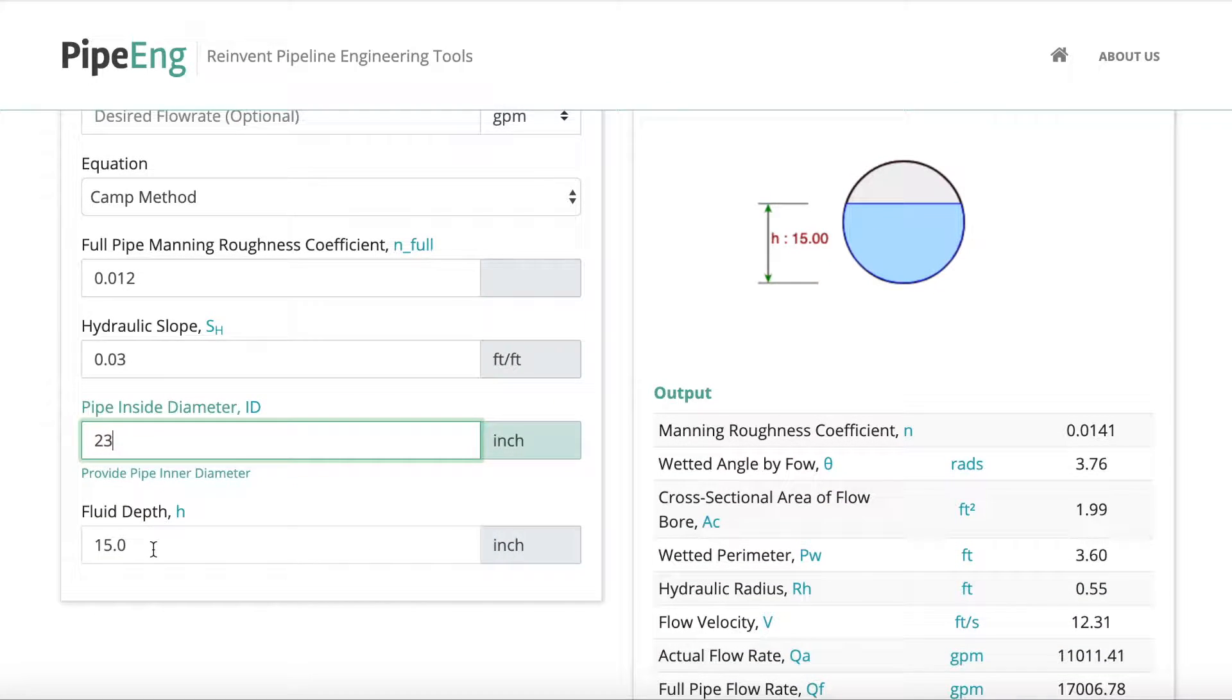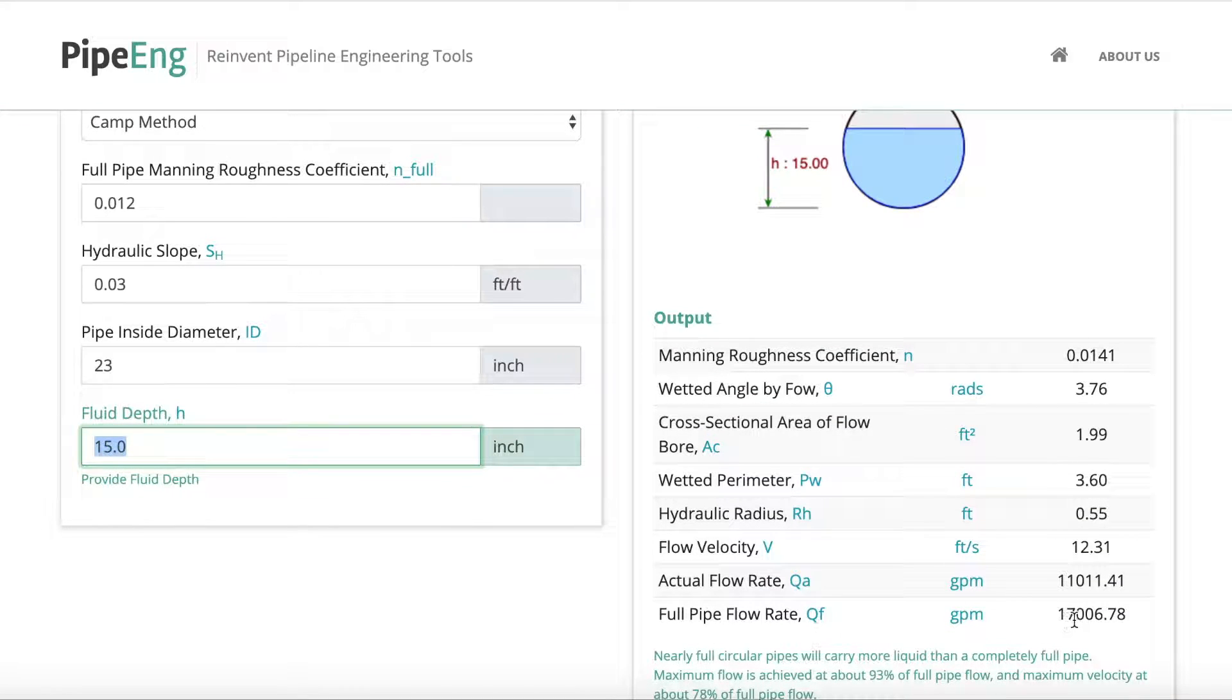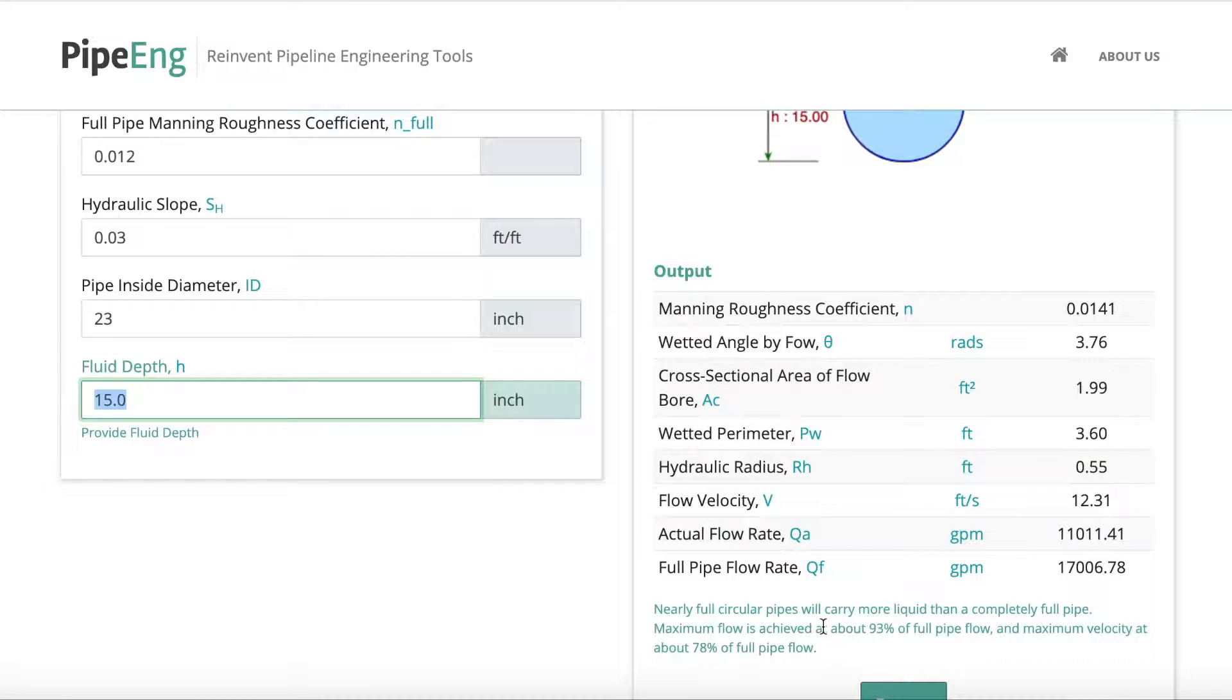And the fluid depth is, you can either know the fluid depth and want to know the actual flow rate, or you want to check the actual capacity. So the full pipe flow rate here is about 17,000 gallons per minute. You can use this as the capacity, but please note that actually the maximum flow is achieved at about 93% of full pipe flow, not actually full pipe flow. So that's why a lot of times if you play with the fluid depth, you will find actually when it's full, the pipe is actually less than the maximum. You get actual flow when it's not full that is actually more than the full pipe flow rate.